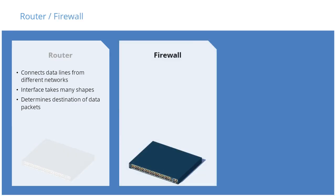A firewall is a network security system that monitors and controls the incoming and outgoing network traffic based on predetermined security rules. It typically establishes a barrier between a trusted, secure internal network and an outside network, such as the Internet, that is not assumed to be secure or trusted. In smaller networks, the router and the firewall are often built into the same device, and so the terms firewall and router are sometimes used interchangeably in casual conversation.